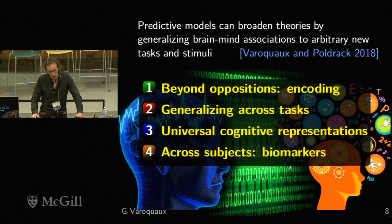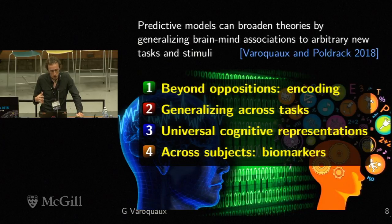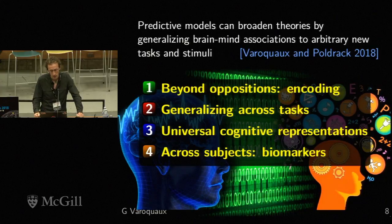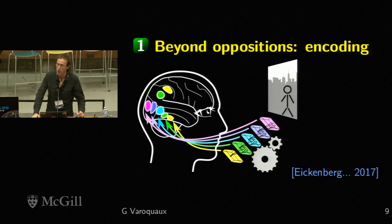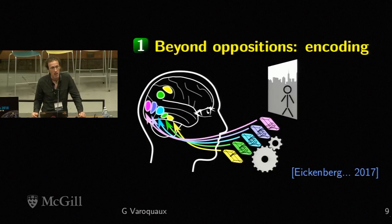Russ Poldrack and I have just finished writing an opinion paper claiming that predictive models can broaden theories by generalizing brain-mind associations to arbitrary new tasks and stimuli. I want to explore and give examples of the challenges we face doing this and how we can address them. I'll start with encoding models and show that they can go beyond opposition — this is mostly based on a paper we published last year with Michael Eickenberg.